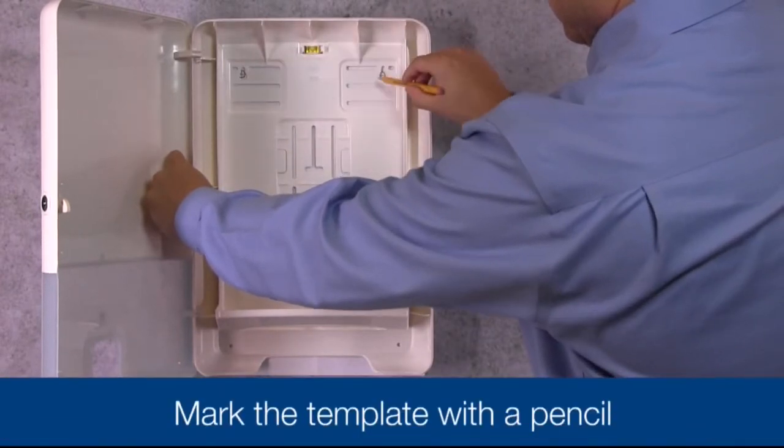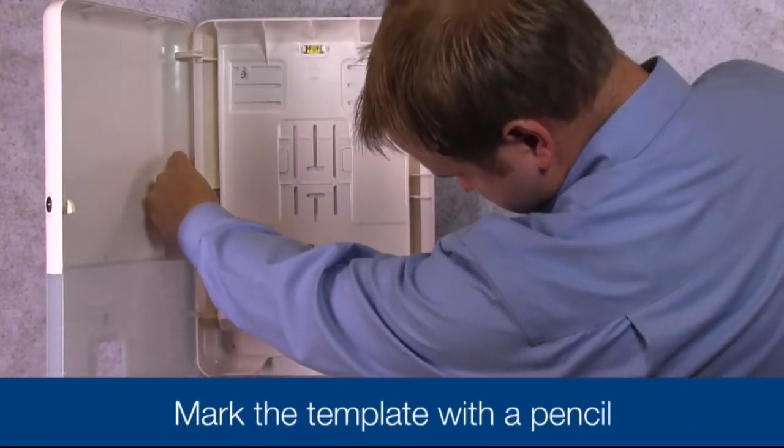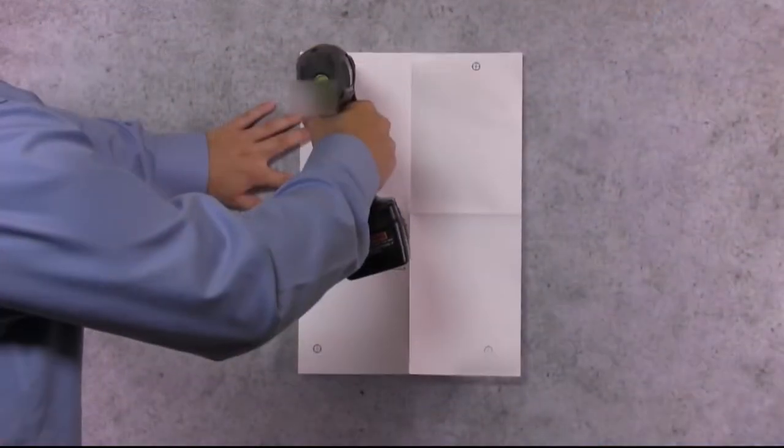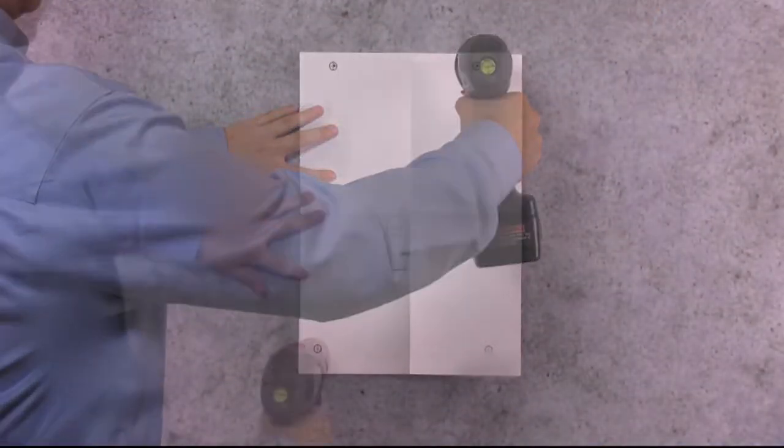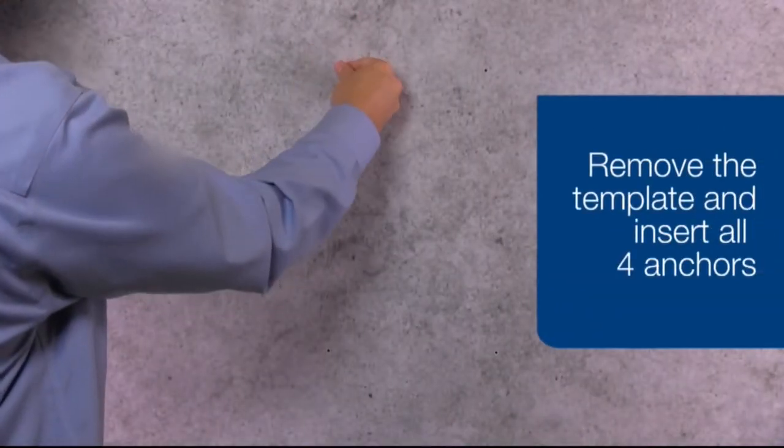Using your pencil, mark the spots in the variable slots where you will be drilling. Drill starter holes through the template into the surface. Remove the template and insert the supplied anchors.